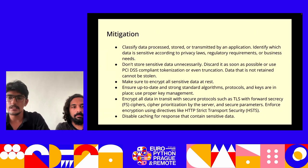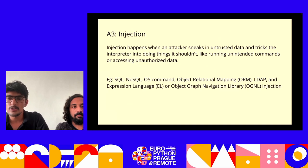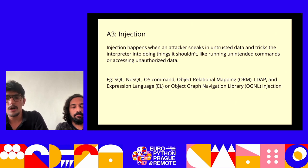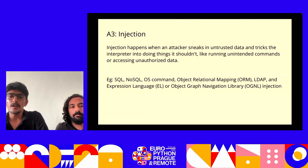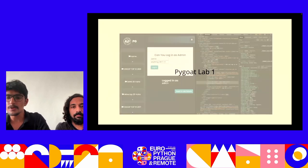The third vulnerability is injection. An application is vulnerable when user-supplied data is not validated, filtered, or sanitized by the backend. Dynamic queries or non-parameterized calls without context-aware escaping are used directly in the interpreter. The most common injection types are SQL injection, NoSQL, OS command, and ORM injections. The concept is identical among all interpreters. Let's look at the PyGoat lab demonstration of SQL injection.